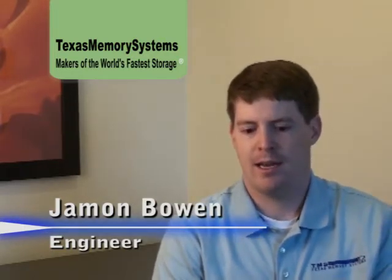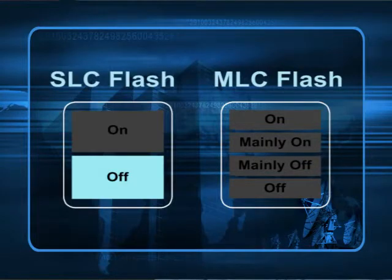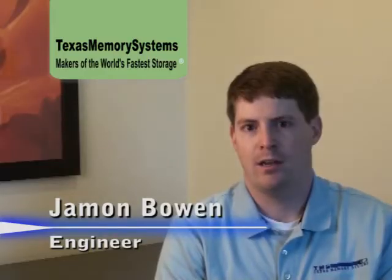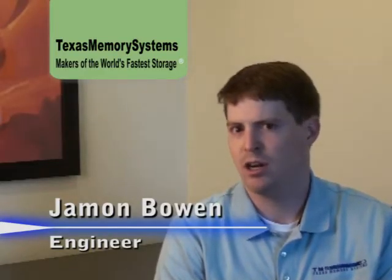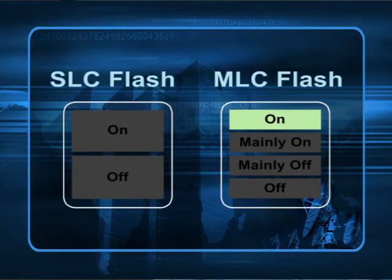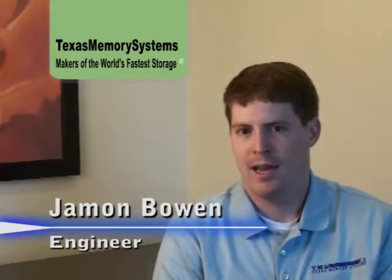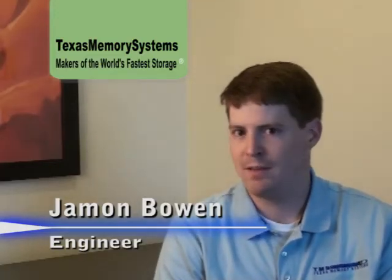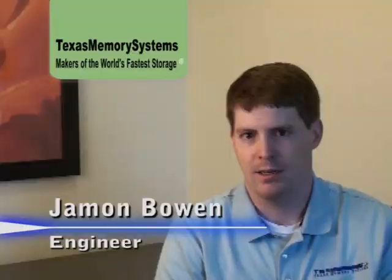In single-level flash, it's either on or it's off. On multi-level flash, it's either on, mainly on, mainly off, or off. And that gives you the benefit that you can store twice as much data, but it comes at a very large penalty.